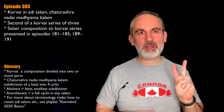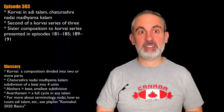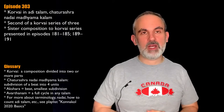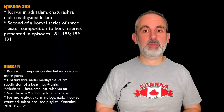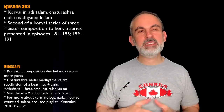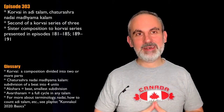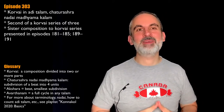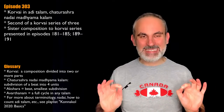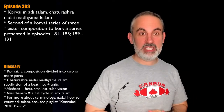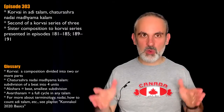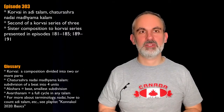Today we are going to look at the second korvai in the series that we started yesterday, that is episode 302. This is a korvai in Aditalam, chaturasra nadai in Madhyamakalam. If any of those terms do not make sense, that's because you have not seen the videos in which I explain them. You can find all those videos under the playlist Konakol 2020 Basics over at my YouTube channel. This is the second series out of three, so let's go right ahead and look at the structure.